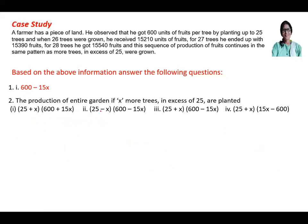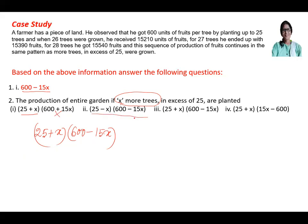Question number two: the production of the entire garden if x more trees in excess of 25 are planted — what will be the number of fruits? We have the fruits per tree as 600 minus 15x. The total number of trees is 25 plus x. So total production is (25 + x) × (600 − 15x). Looking at the options: (25+x)(600−15x) is the correct answer — that is option three.